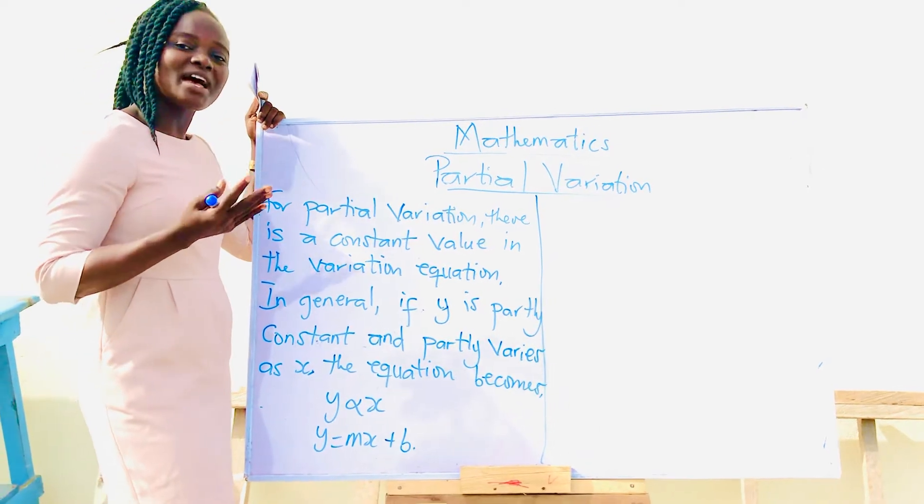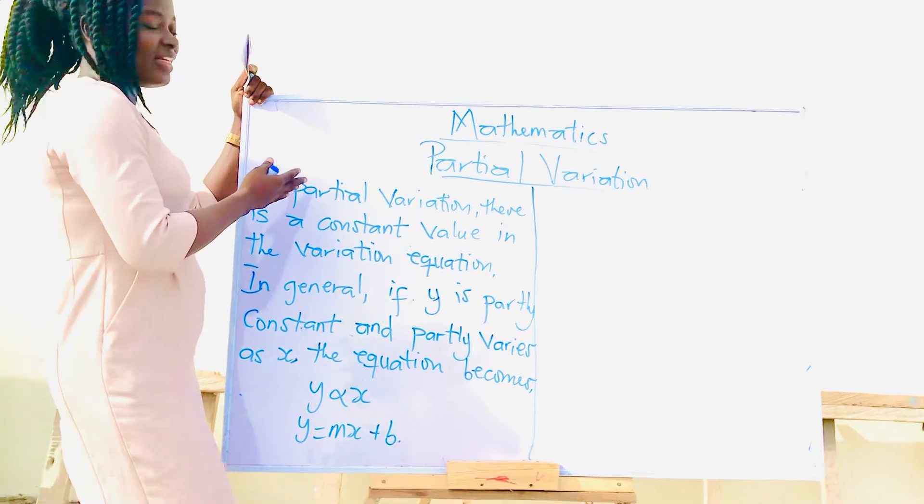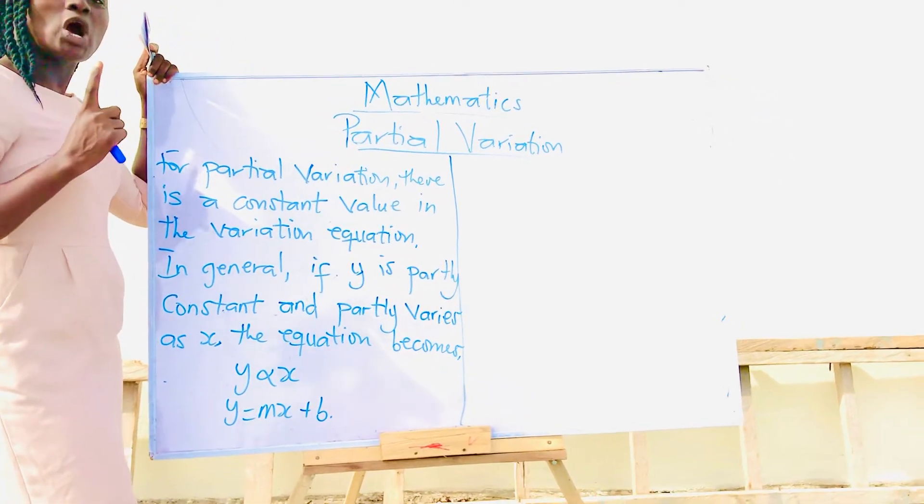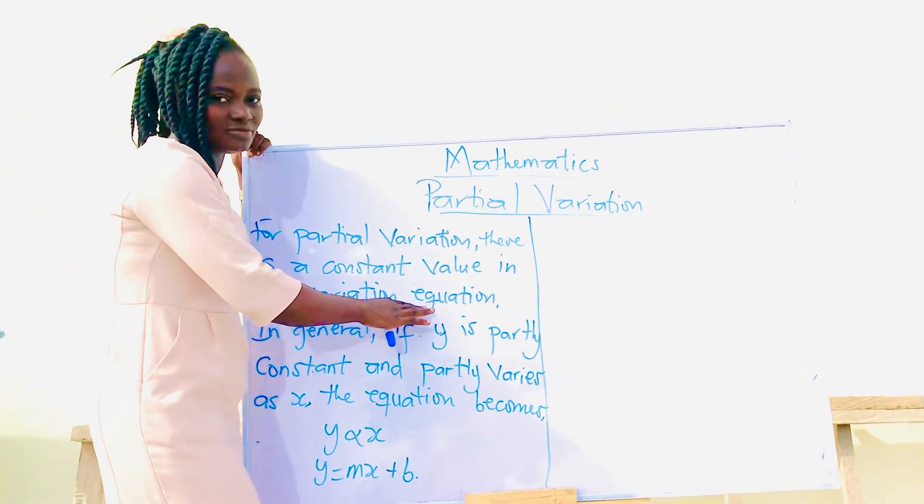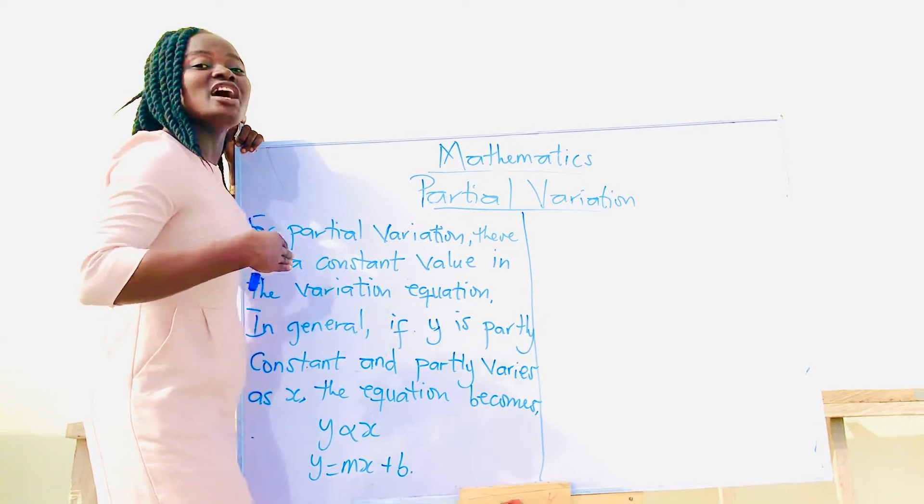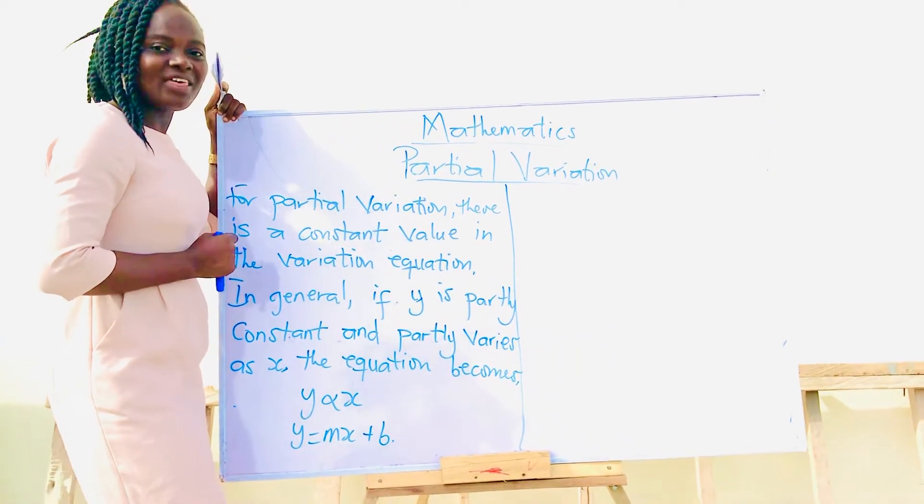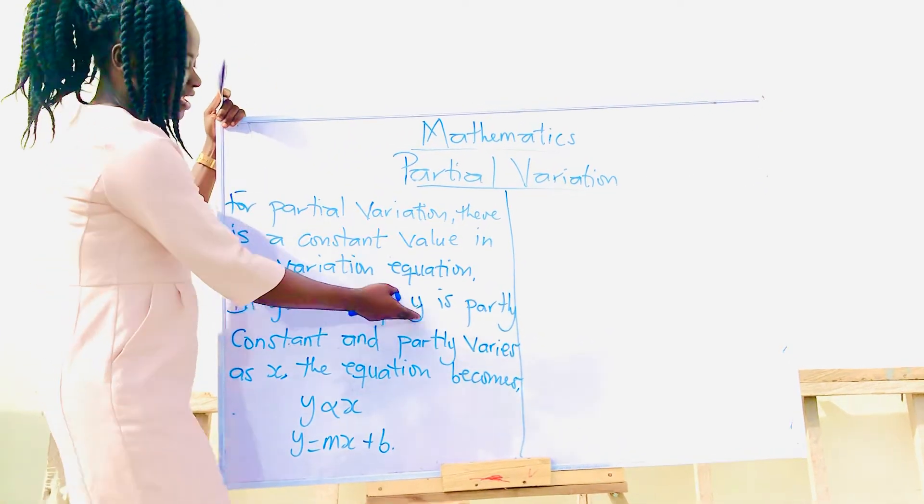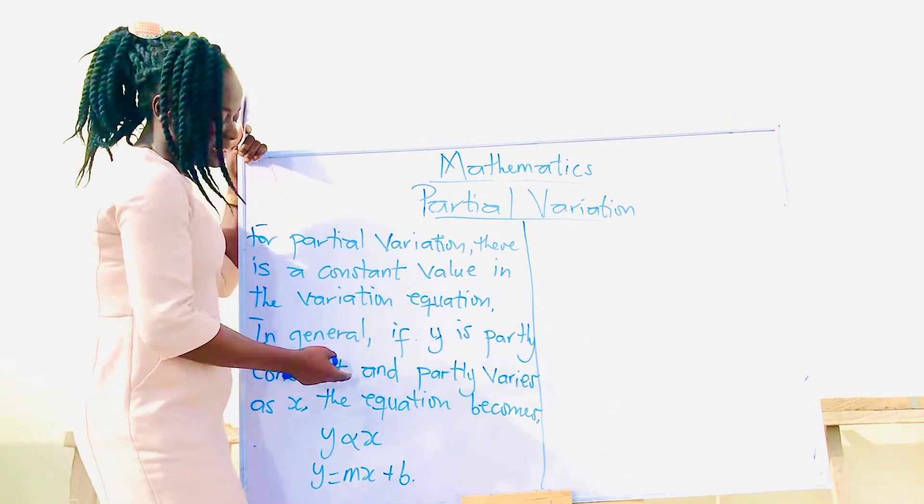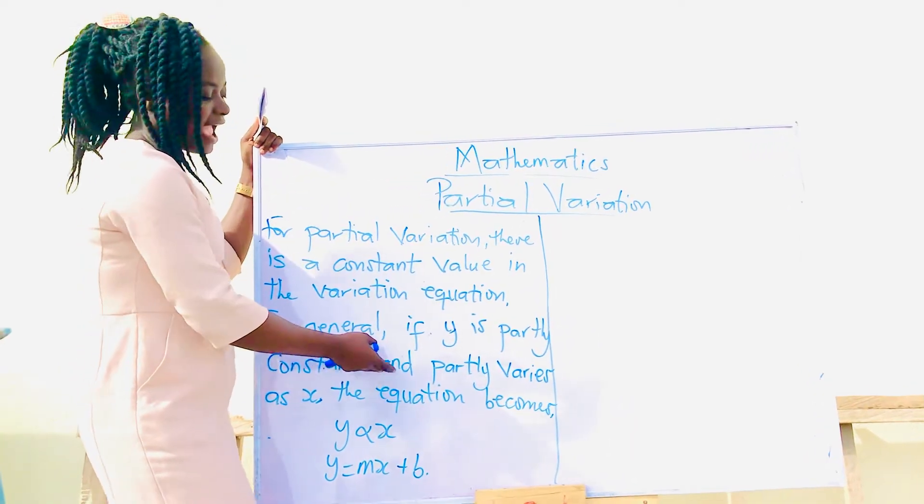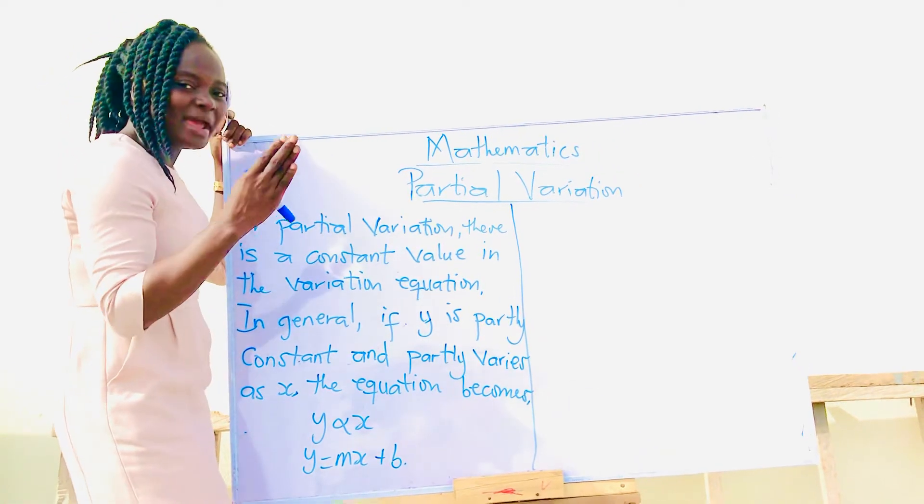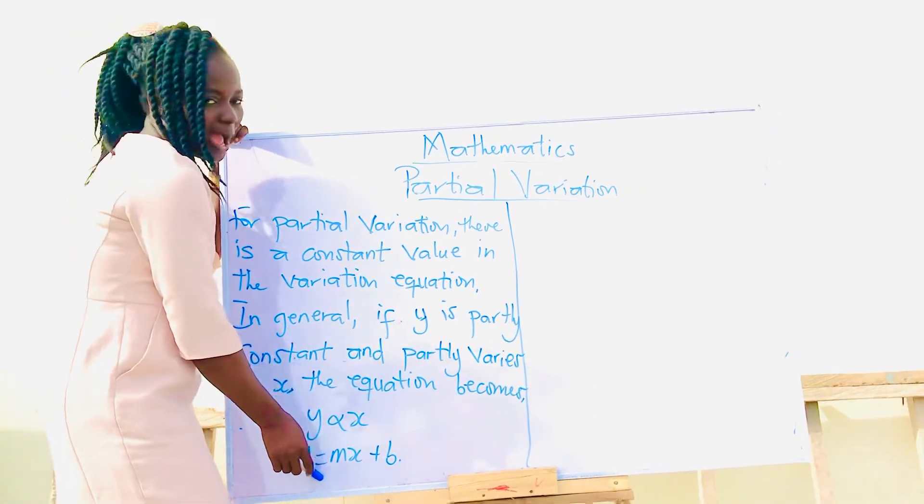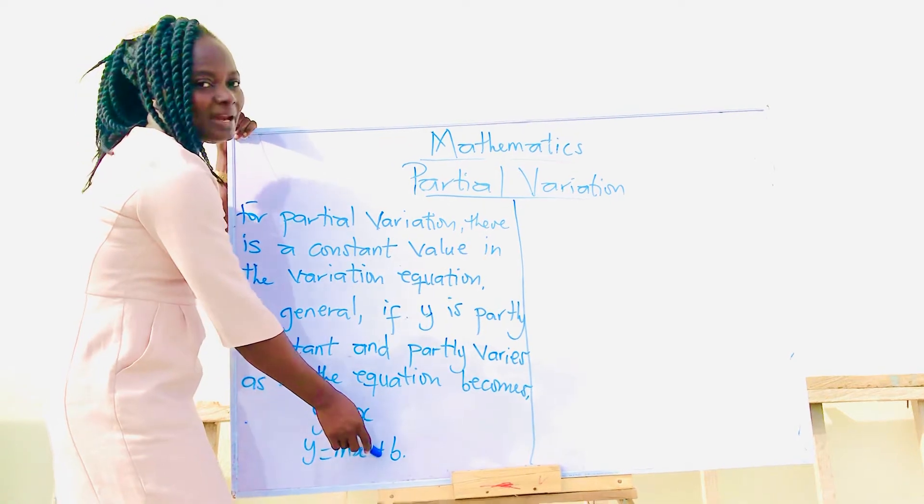When you talk about partial variation, there is always a constant value in the variation equation. In general, we can say that if y is partly constant and partly varies as x, the equation becomes y equals mx plus b.